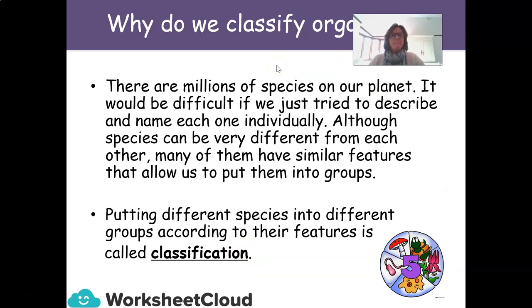As you know, there are millions of species on our planet. It would be difficult if we just tried to describe and name each one individually. Although species can be very different from each other, many of them have similar features that allow us to put them into groups. Putting different species into different groups according to their features is called classification.